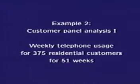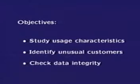The data in example 2 are based on telephone records for 375 residential customers that formed the control group in an advertising effectiveness study. For each customer, we have a time series of weekly telephone usage corresponding to the 51 weeks of the trial. Again, usage is measured by the number of calls made. The main objectives of the analysis are to gain an understanding of basic usage characteristics and to identify unusual customers. In addition, we will check data integrity.